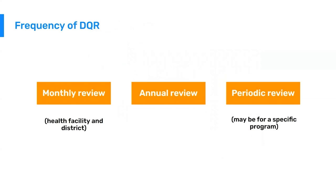If you're conducting data quality reviews, let's talk about frequency. Different programs and different countries at different levels will have different frequencies. Typically, a monthly data quality review is the most frequently done, often at health facilities or district level, as new data comes in every month. Annual data quality reviews are often done at national or regional level — large events where multiple programs review all their data over the course of the year, looking at annual trends and finding big outliers.